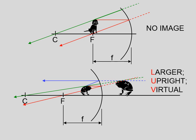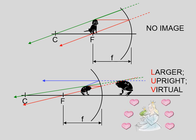Any two of those rays would allow us to locate our image. And it turns out that any time you have an object between the focal point and the mirror with a concave mirror, you are going to get this basic answer: larger, upright, virtual.